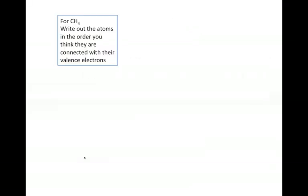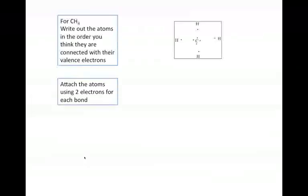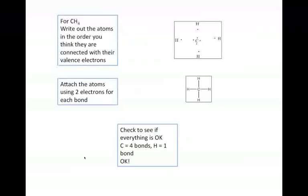So, for example, if we use CH4 again, in this case, what we do is we write out the atoms in the order you think they're connected. Again, this is the hard part. So carbon's got four valence electrons, and hydrogen has got one. And then what you do is you just connect up the atoms again, using two electrons for each bond. So we get the same structure, CH4. And we check to see if everything's okay. We've got carbon with the right number of bonds and hydrogen also. So we're okay. We're good to go.